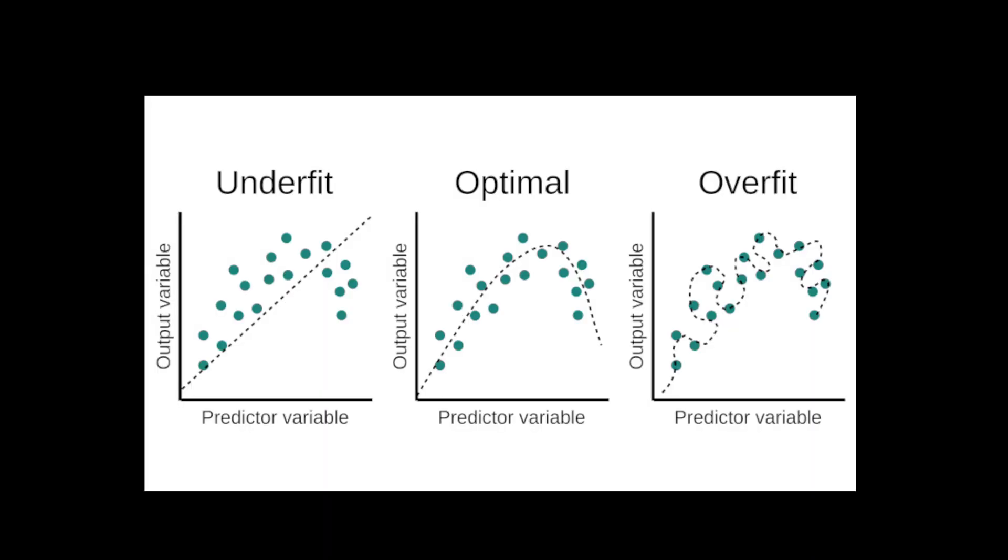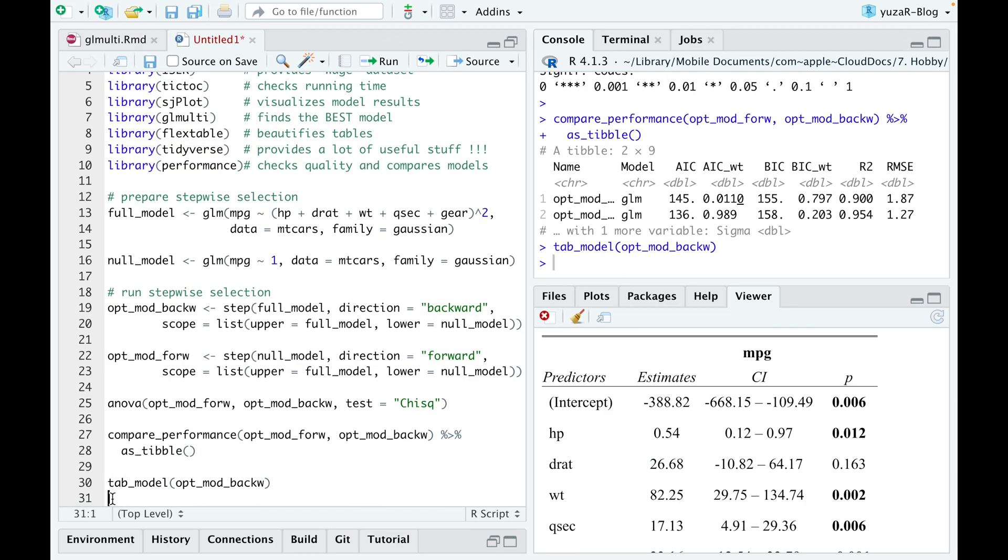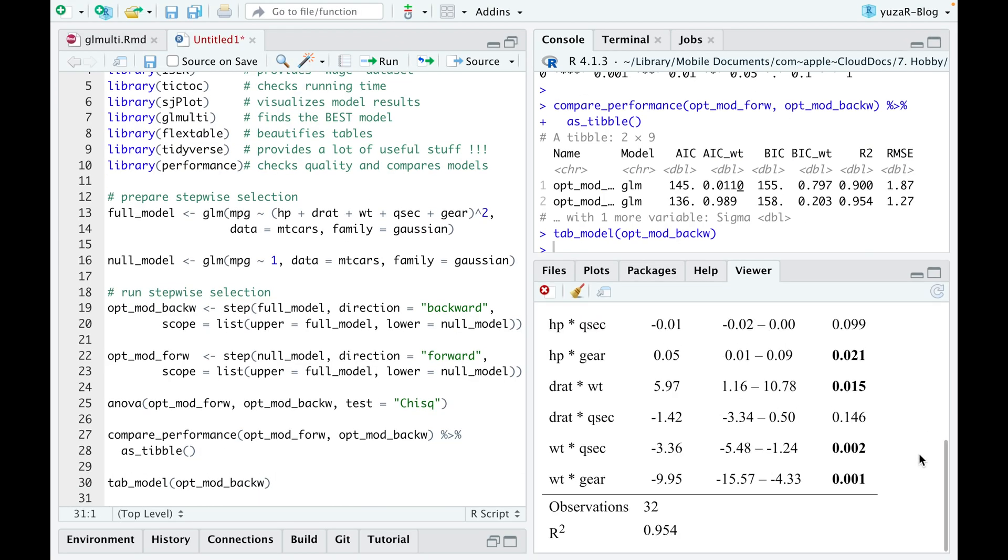And, as described before, an overfitted model is bad because it describes the noise rather than genuine relationships between variables. Consequently, we can't trust the coefficients and p-values of overfitted models.